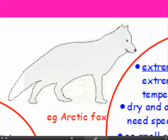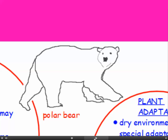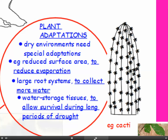Examples of animals adapted in this way are the Arctic fox and the polar bear. Some plants are also adapted to live in very dry environments. An example is a reduced surface area to reduce evaporation — very tiny leaves, or in the case of the cactus, leaves reduced to simple spines so there's less evaporation. They'll also need large root systems extending a long way underground to collect more water, and water storage tissues such as a swollen stem that can take up a lot of water after rainfall, allowing survival during long periods of drought.